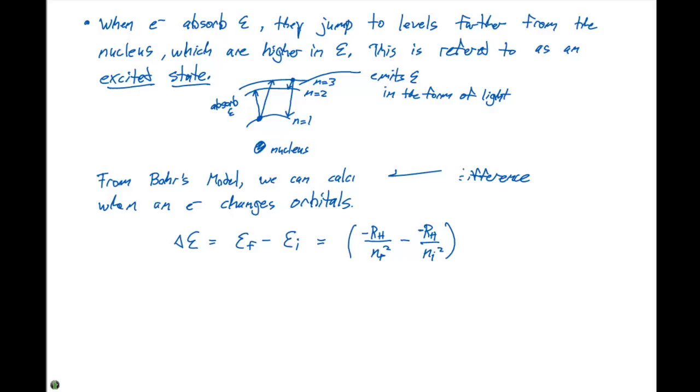When Bohr manipulated these equations, he came up with an equation that said delta E is gonna equal negative 2.18 times 10 to the minus 18th joules times one over nf squared minus one over ni squared. And this equation right here is gonna be our Bohr equation.